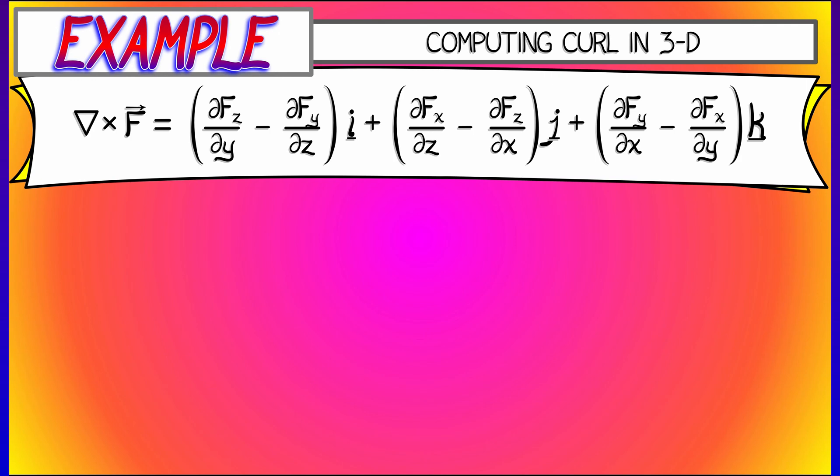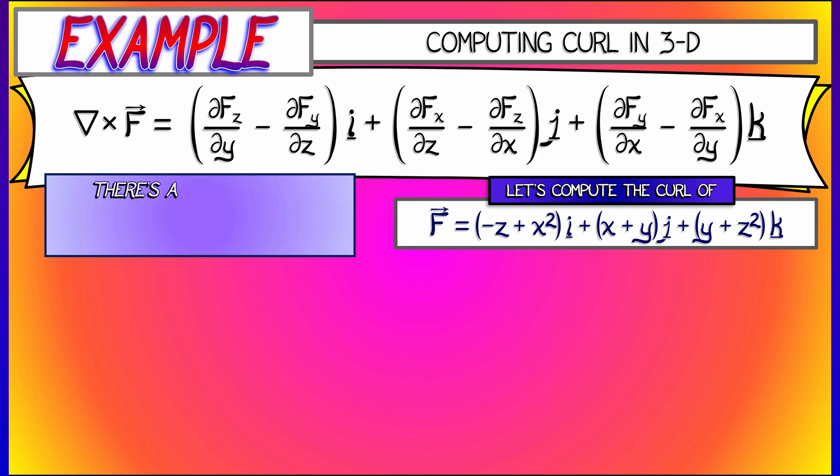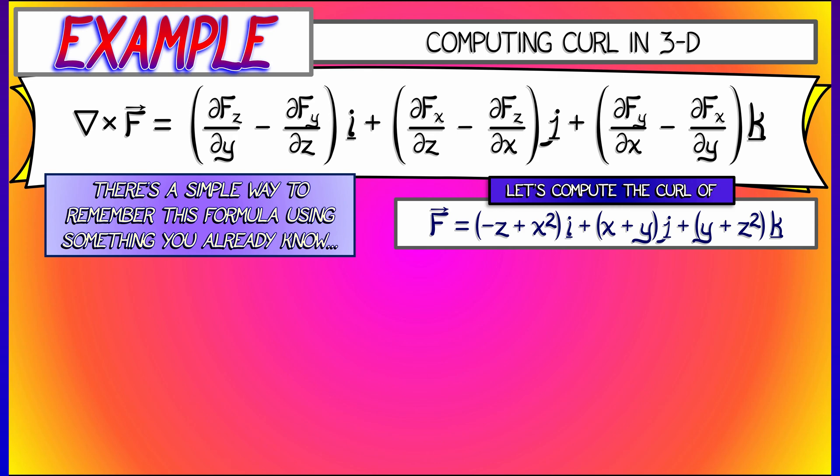Let's see an example where we're computing the curl of a vector field. Let's say the I component is negative Z plus X squared, the J component is X plus Y, and the K component is Y plus Z squared. You can plug that into this formula. But there's a bit of a hack. There's a nice way to do a computation without necessarily having to remember all of these terms, and this uses something that we already know, namely determinants.